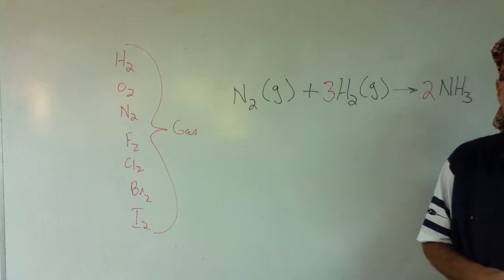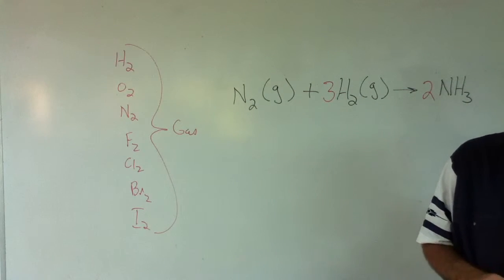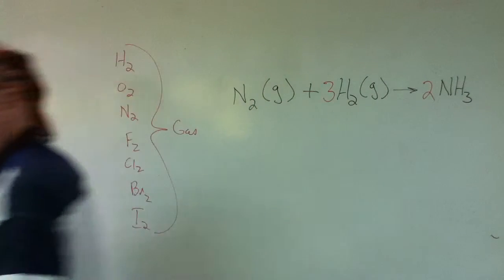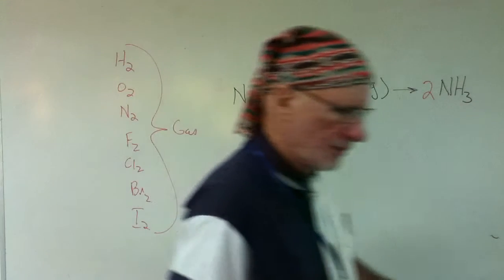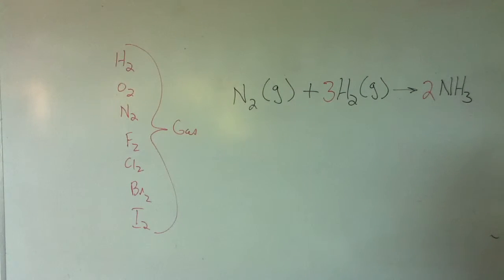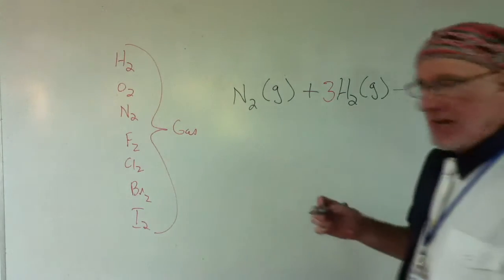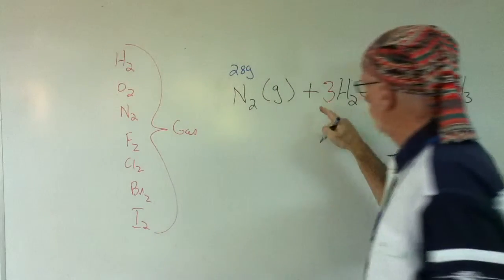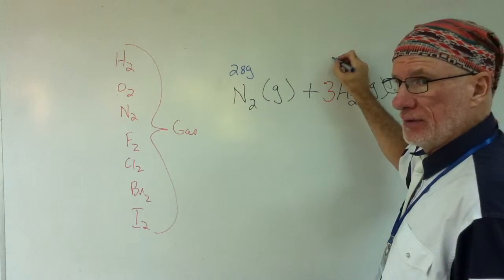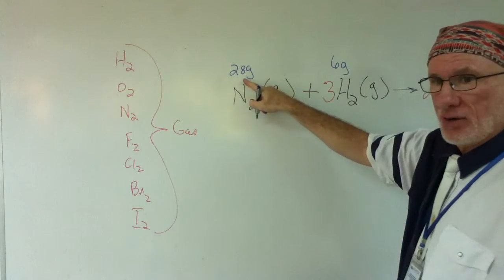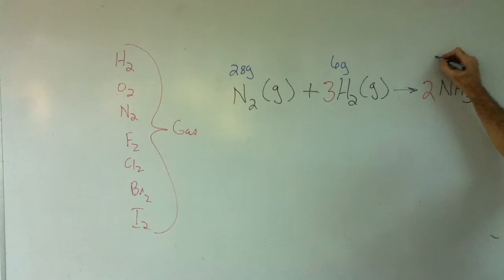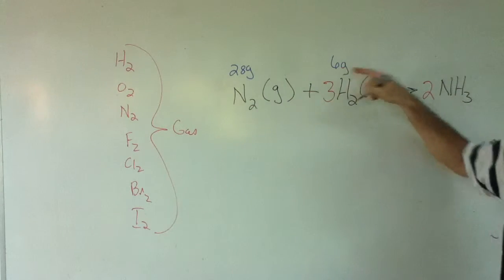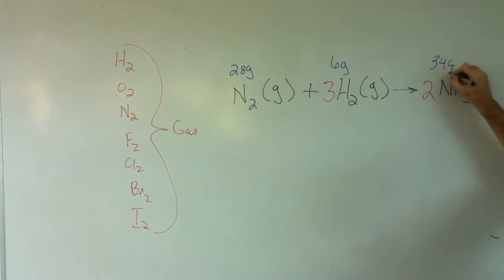What's the mass of one mole of nitrogen? 28 grams. Excellent. How about three moles of hydrogen? Six. And then this? 34. There you go.